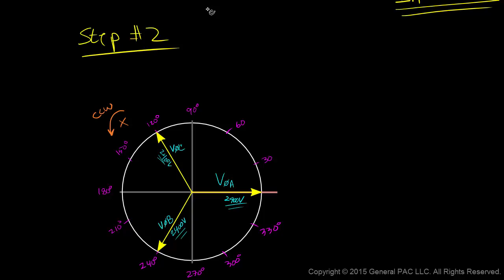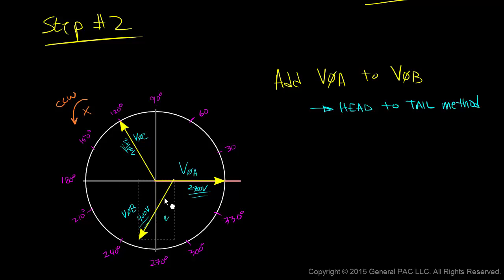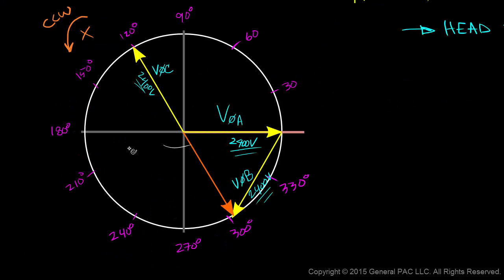Step number two. In the second step, we're going to add phase A voltage with phase B voltage using the head-to-tail method. So we'll pick up phase B and connect it to the head of phase A. So essentially, the head of phase A is connected to the tail of phase B. Hence the name, the head-to-tail method. And the resultant vector is the vector that starts at the origin and ends at the last phasor, which is the phase B voltage. So this is our resultant vector. But this resultant vector represents or equals phase A voltage plus phase B voltage.